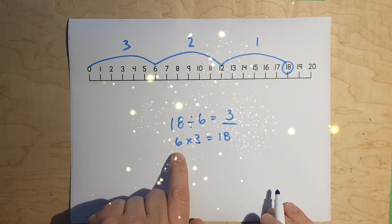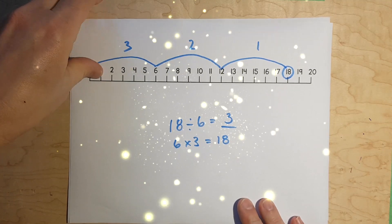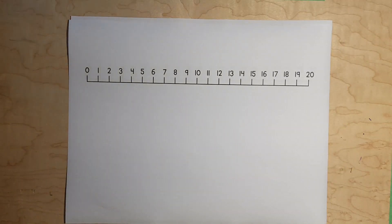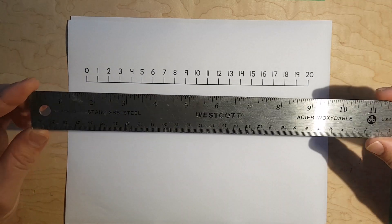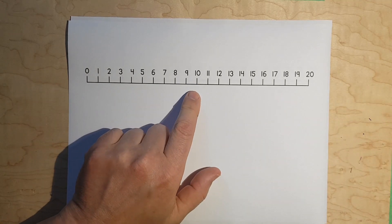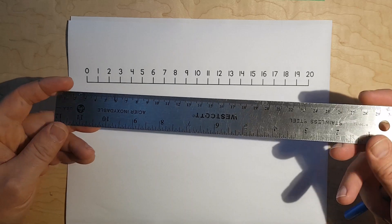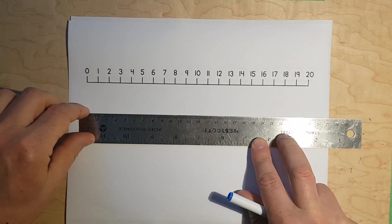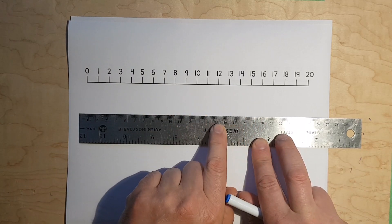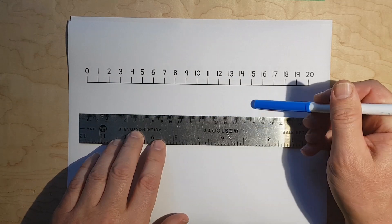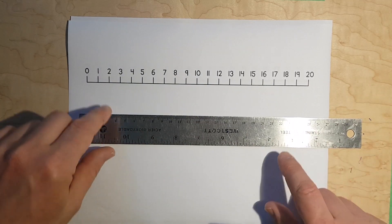And if you know your times tables, you know that this is right. Now, if you don't have a piece of paper with the number line — which I'll attach to the assignment — you can use a ruler. You can hold the ruler down and skip count with it because it has all the numbers. You can even make a little line and some dashes to draw it.